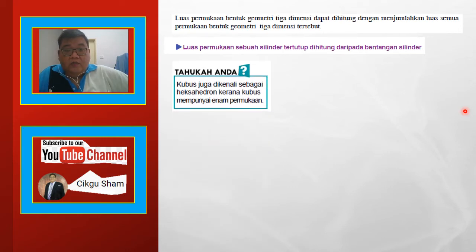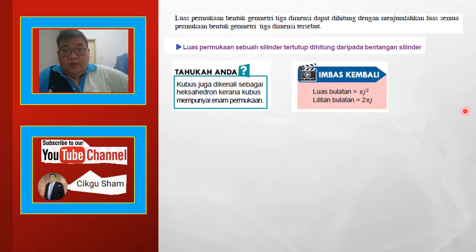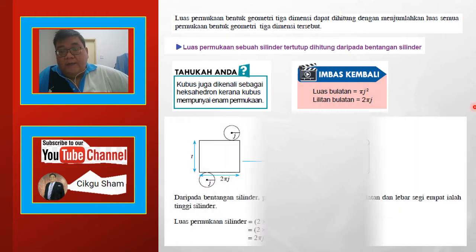Tahukah anda, kubus juga dikenali sebagai hexahedron kerana kubus mempunyai 6 permukaan. Ini kena imbas balik, sebab kita akan guna balik luas bulatan pi j², lilitan bulatan 2πj.